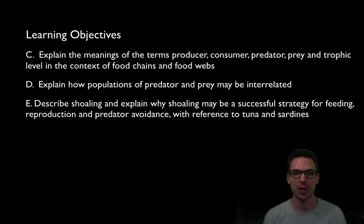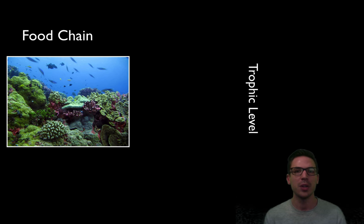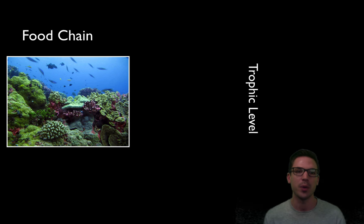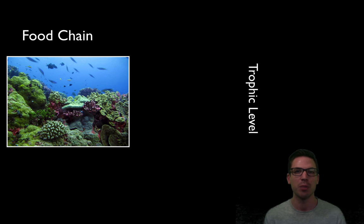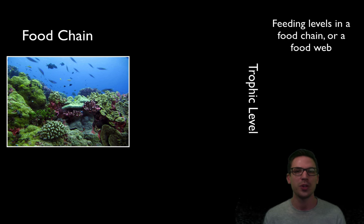Now when we take a look at an ecosystem we can show those feeding relationships in a very simple diagram that we call a food chain. At this point you should really know what a food chain is. Food chains are broken down into various levels that we call trophic levels. These are going to be the feeding levels in a food chain or a food web.